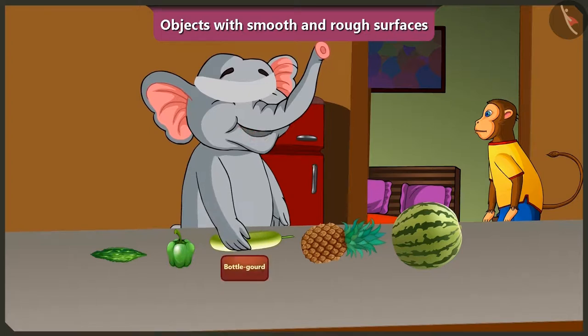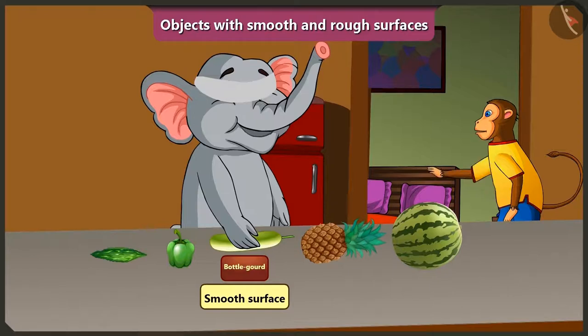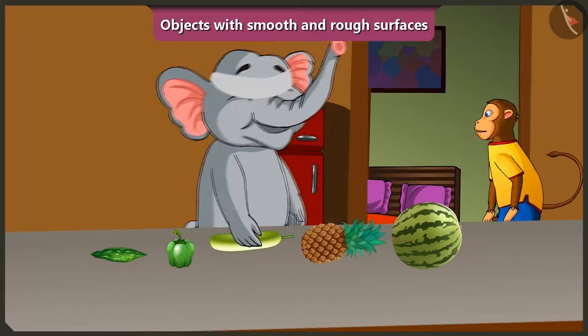And this is a bottle gourd. This too has a smooth surface. Absolutely right Appu. Come on, now try and feel these fruits.